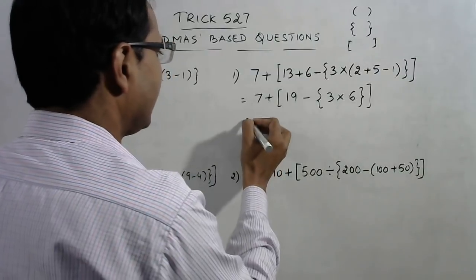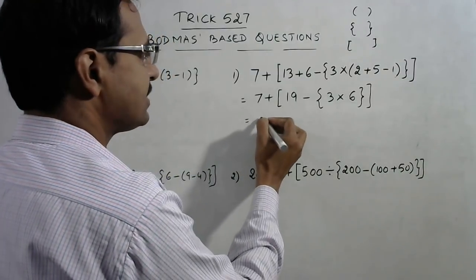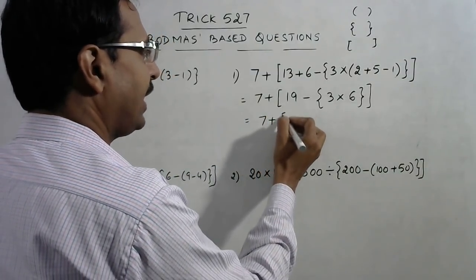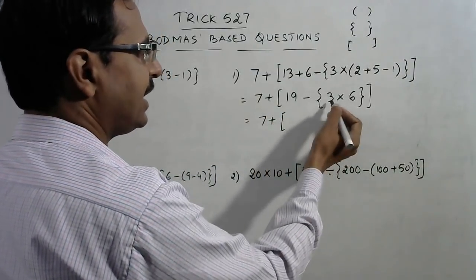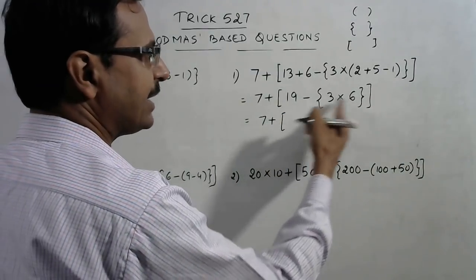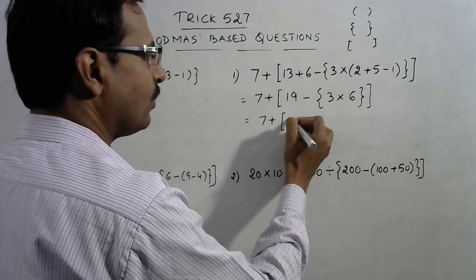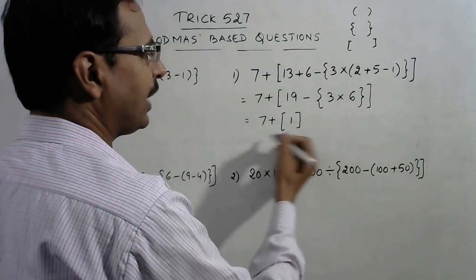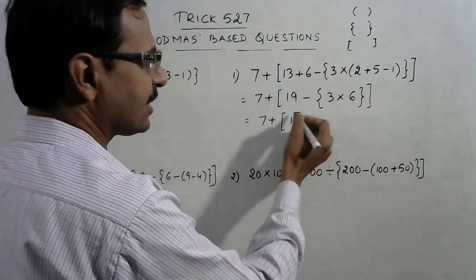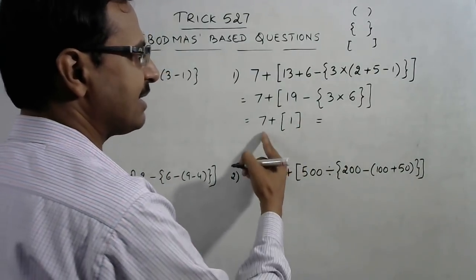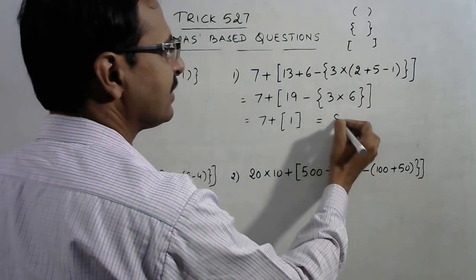For the next step: we have 7 plus, and 6 times 3 gives 18. So 19 minus 18 is 1, removing another bracket. Now the square bracket makes no difference: 7 plus 1 is 8.